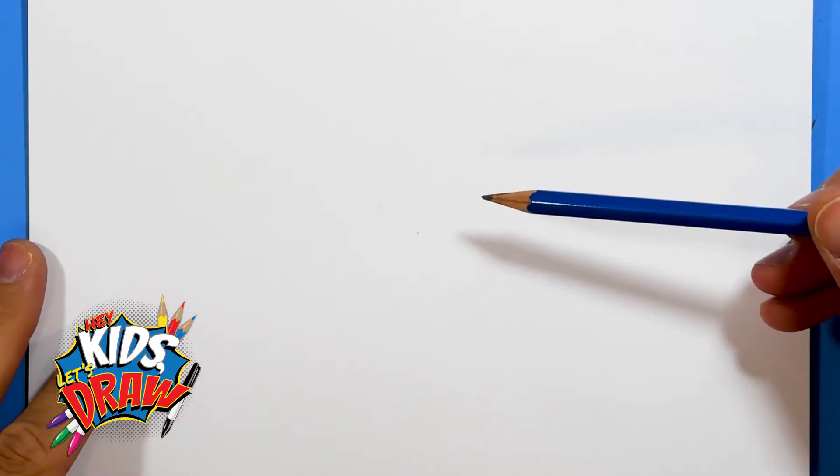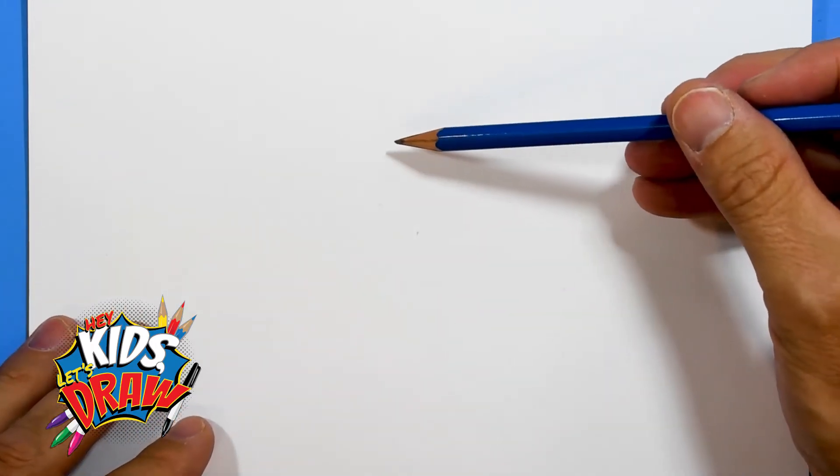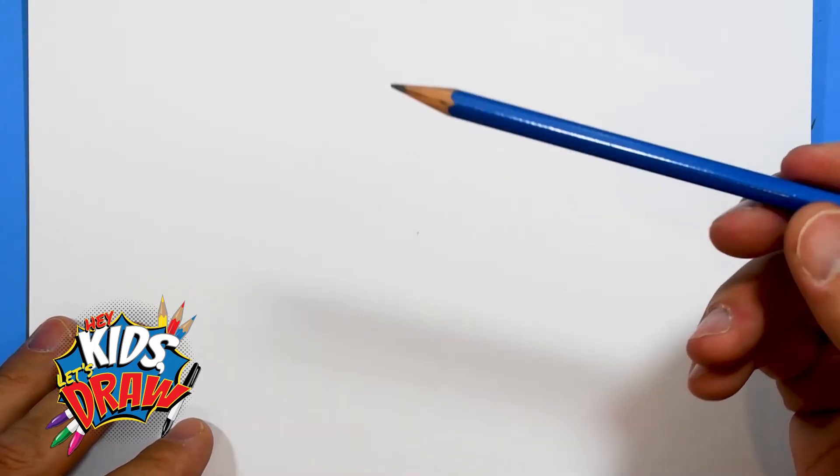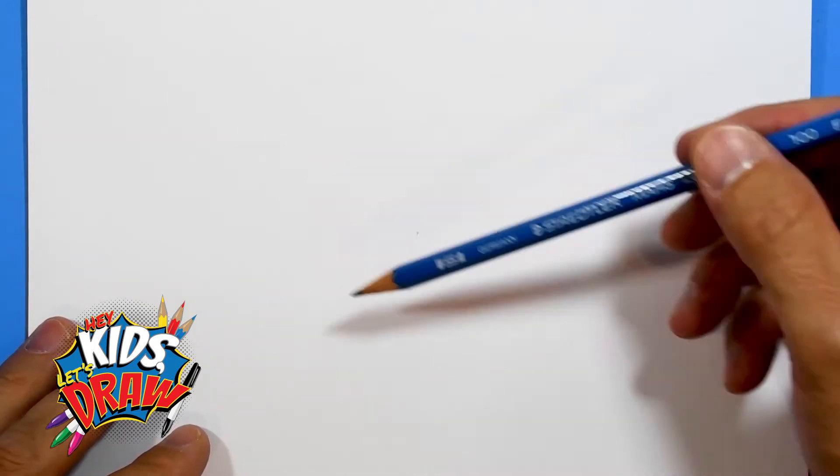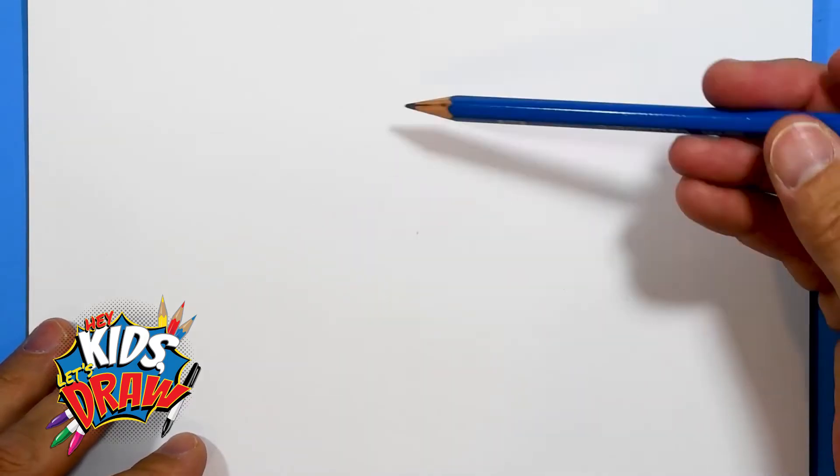Hello everybody and welcome to Hey Kids Let's Draw. In this lesson we're gonna learn how to draw a simple eye. We're gonna start right here in the center of our page, holding that pencil light so we can draw the basic shape and then come over it with darker lines, or we can erase it easily.